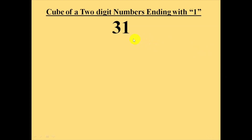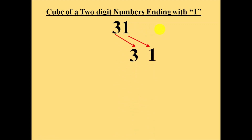What we will do is note down these two numbers as they are, like this: 1 and 3. Then we will make the square of 3 and note it down here, and then we will make the cube of 3. Cube is 27, and note down here like this.